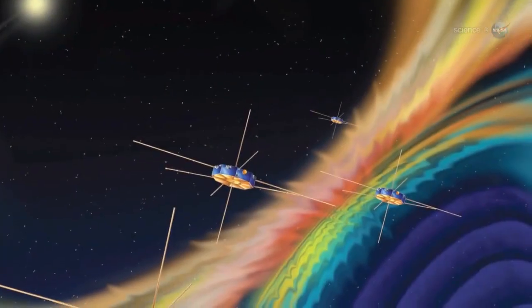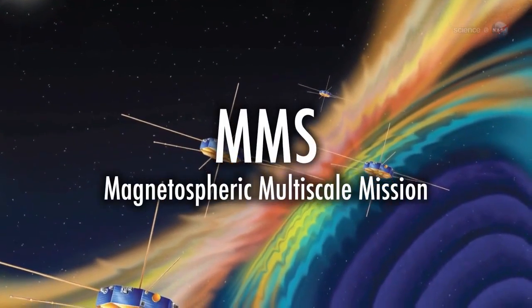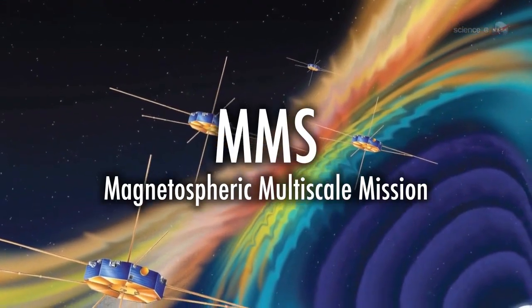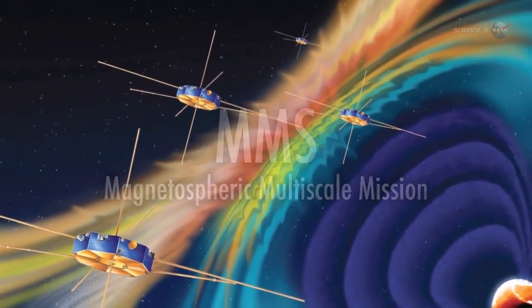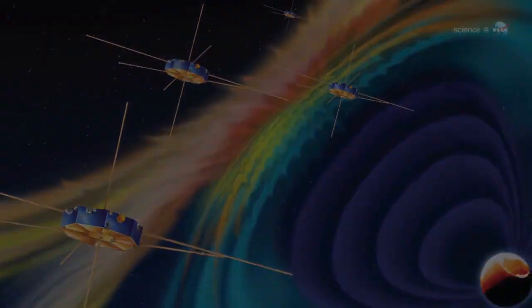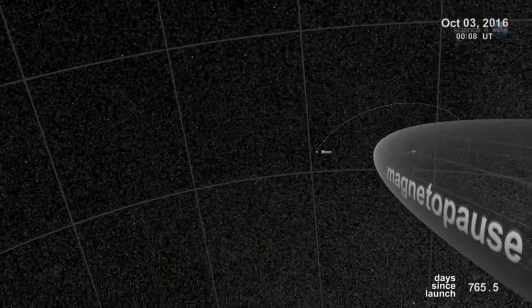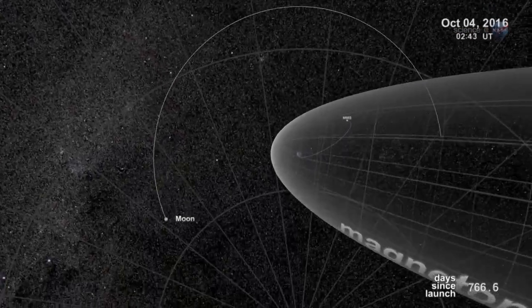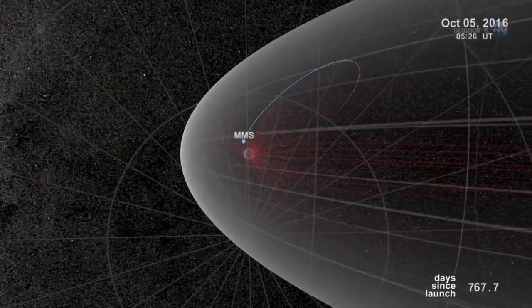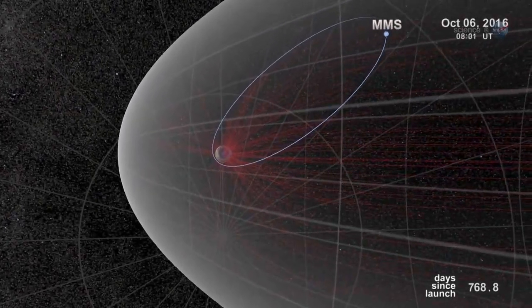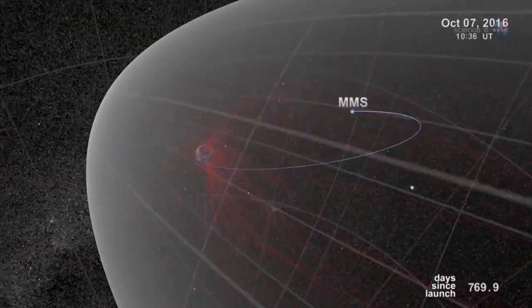NASA is planning a mission called MMS, short for Magnetospheric Multiscale Mission, due to launch in 2014 to study the phenomenon. Bristling with energetic particle detectors and magnetic sensors, the four spacecraft of MMS will spread out in Earth's magnetosphere and surround the portals to observe how they work.